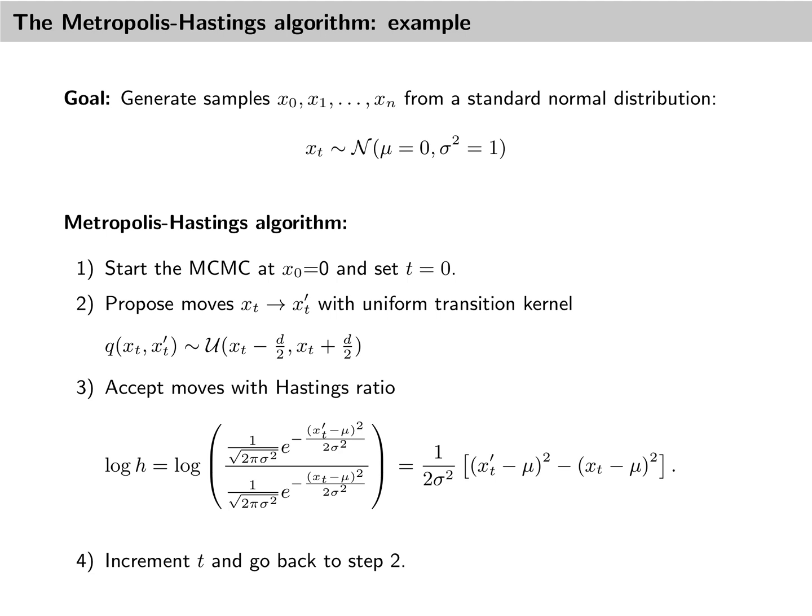As usual, the last step of the Metropolis-Hastings algorithm then consists of incrementing the index and going back to step 2, that is, continuing to propose moves from wherever we resulted in step 3. I have implemented this simple algorithm in R. We are going to use it to study a few properties of Markov chain Monte Carlo algorithms in the following slides.